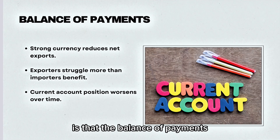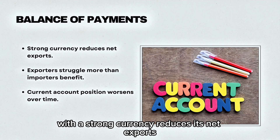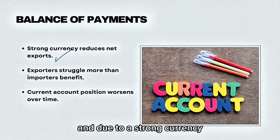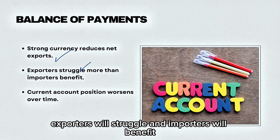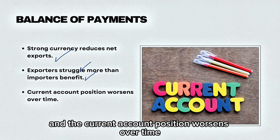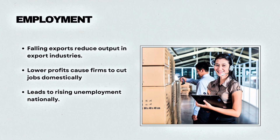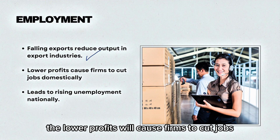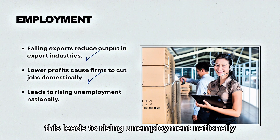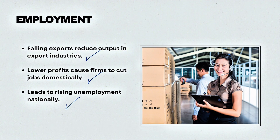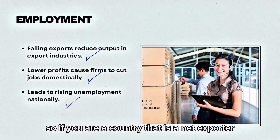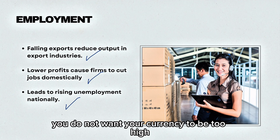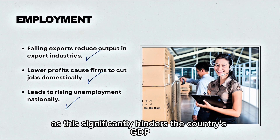The effect on the macro economy is that a strong currency reduces net exports — exporters will struggle and importers will benefit, and the current account position worsens over time. Another effect is employment: falling exports reduce output in export industries domestically, so lower profits will cause firms to cut jobs, leading to rising unemployment nationally. So if you are a country that is a net exporter, such as China, you do not want your currency to be too high, as this significantly hinders the country's GDP and income.